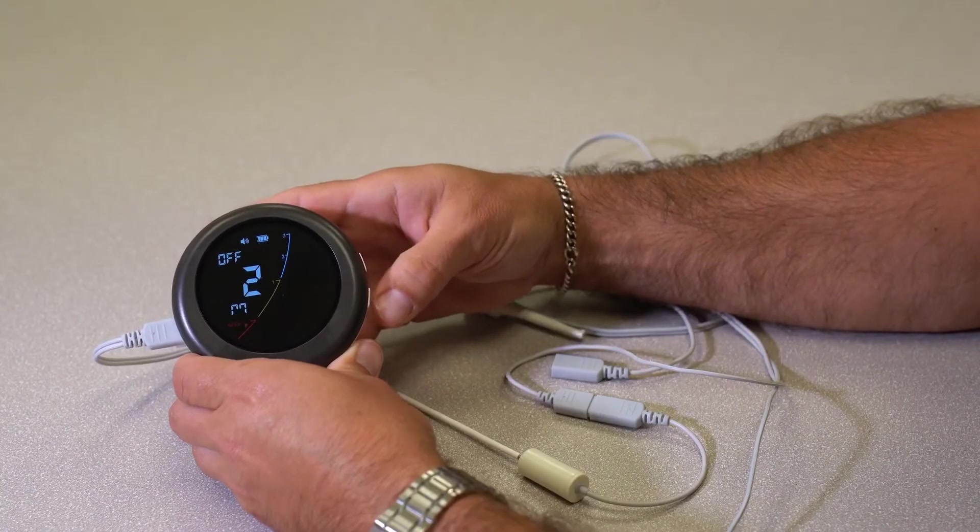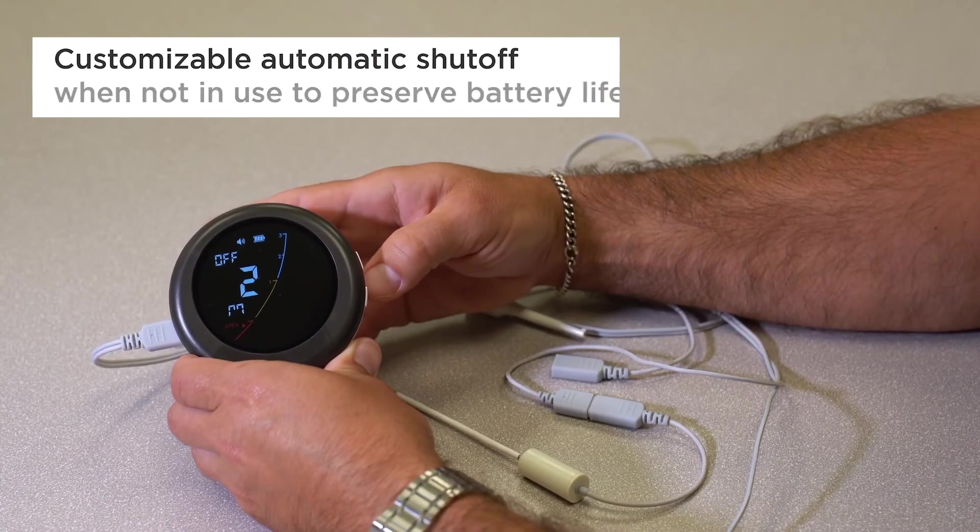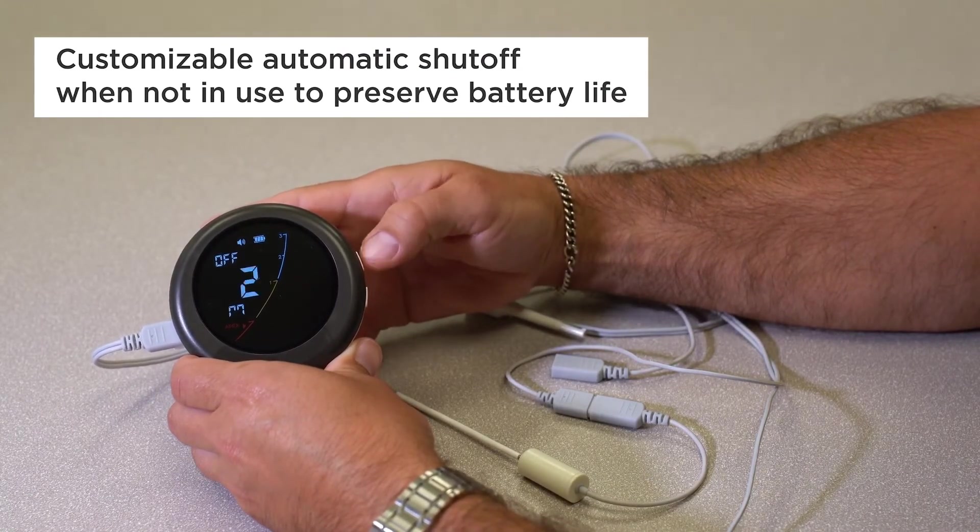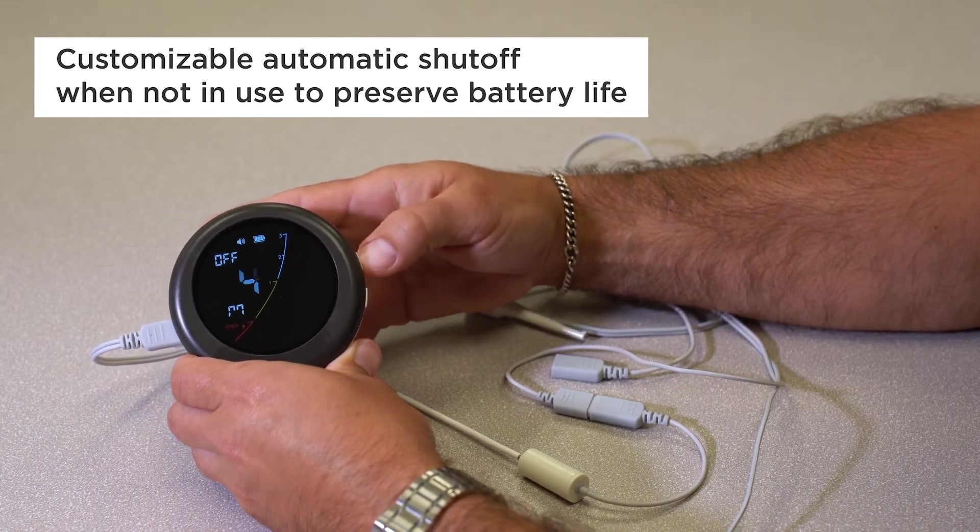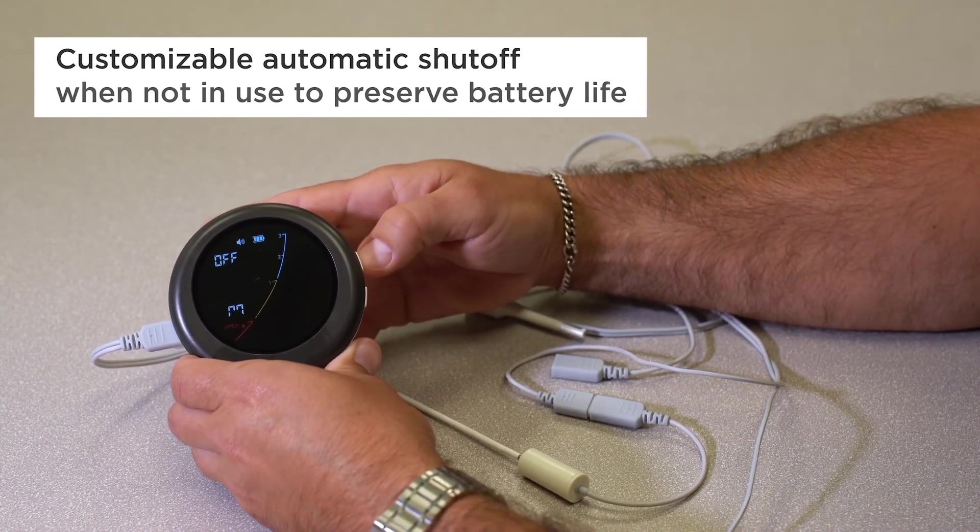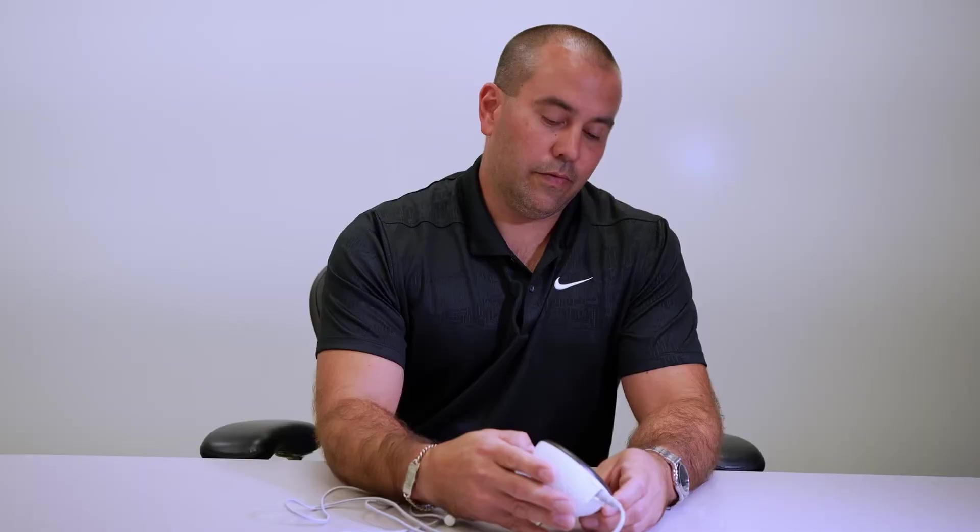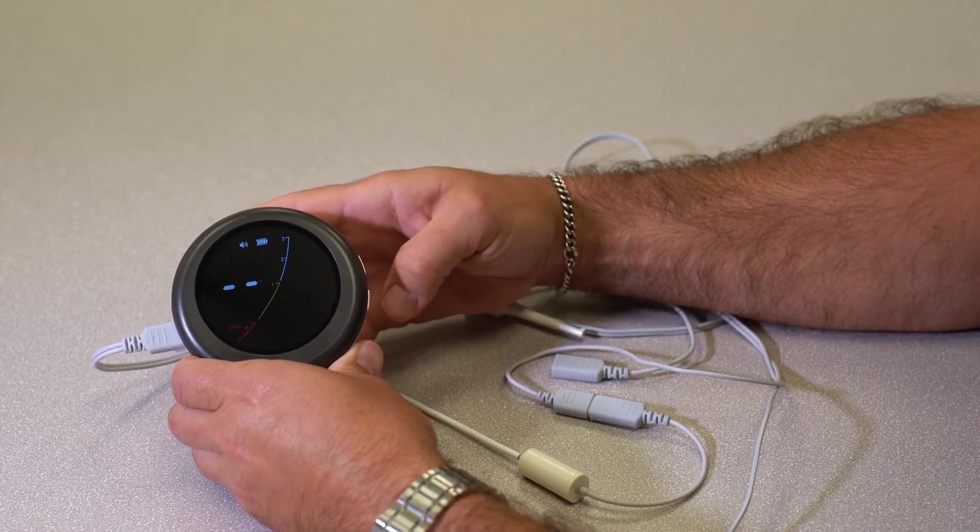Hit the settings button one more time. This is your automatic shutoff. So right now, after two minutes, this is automatically going to shut off. I can customize that to go up to 10 minutes before shutoff kicks in to preserve battery life. Setting button one last time, and you're done.